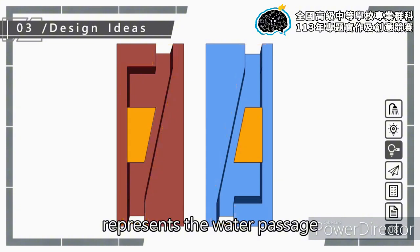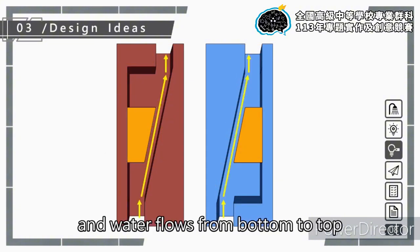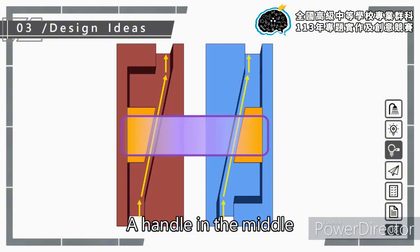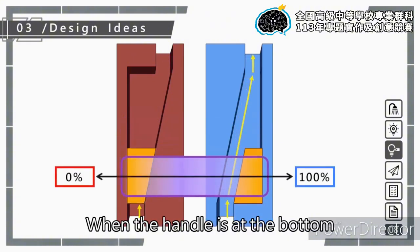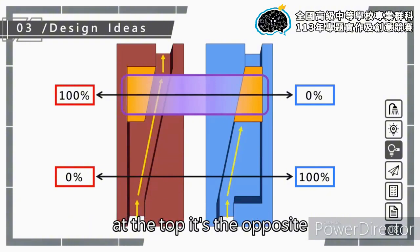The orange part represents the valve core and the yellow grooved part represents the water passage. The left side is for hot water, the right side for cold water, and water flows from bottom to top. A handle in the middle connects two trapezoidal valve cores. When the handle is at the bottom, it's zero percent hot water and one hundred percent cold water. At the top it's the opposite, with proportional control in between.